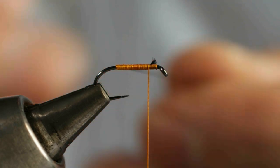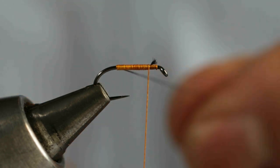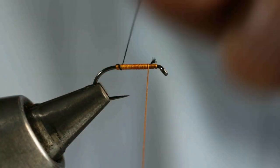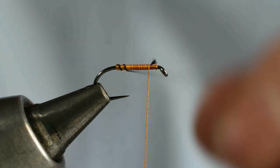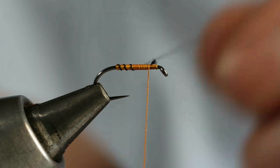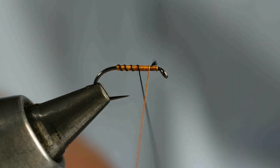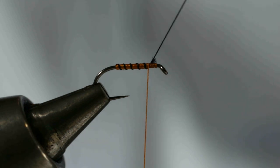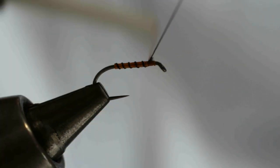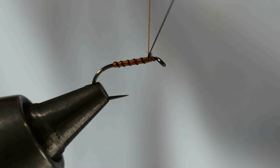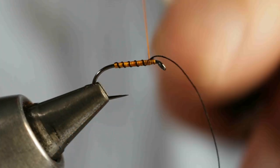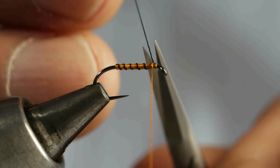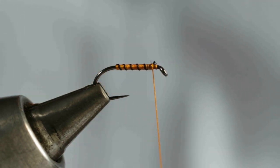Now with your silk to form the rib just simply come over that orange body in nice symmetrical turns. And it's important when you do the rib is that you wrap your ribbing material in the same direction as you wrapped your original silk. This is important because then when you come to trap it in you're actually working with the thread. So it's actually binding that rib down. If you go the opposite way around it has a tendency to slightly loosen that thread. So we always want to go in the same direction as the initial wraps of silk.